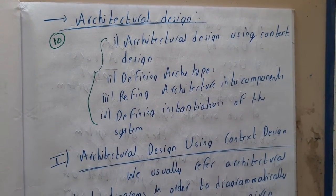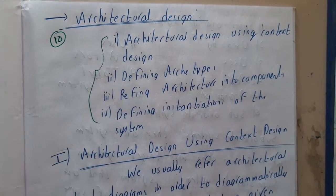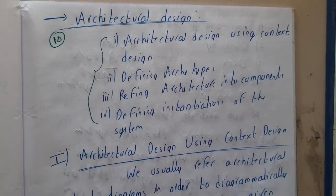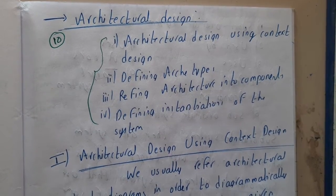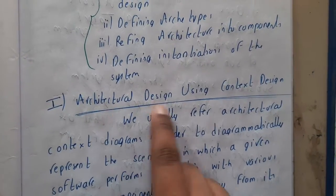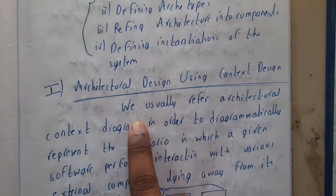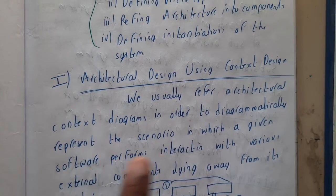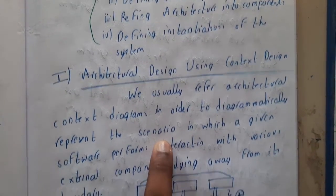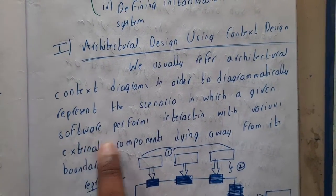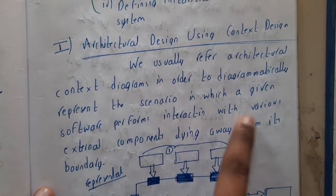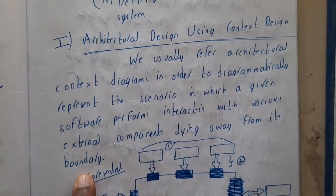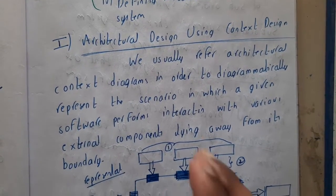I'm saying one thing — the four topics I've collected are from the textbook, so I just referred the textbook and wrote some points for our examination. So, architectural design using a context diagram: we usually refer to an architectural context diagram in order to diagrammatically represent the scenario in which a given software performs, interacting with various external components lying around its boundary.